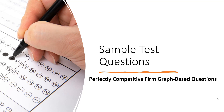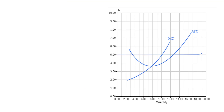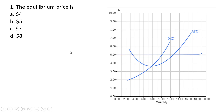In this video we're going to do sample test questions dealing with a perfectly competitive firm, and these questions are all going to be graphical based. Here is a perfectly competitive firm. First question: the equilibrium price is $5, which just represents the perfectly competitive firm's demand curve or marginal revenue curve.